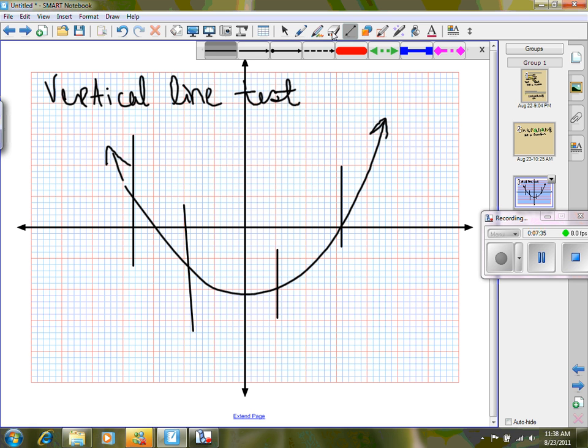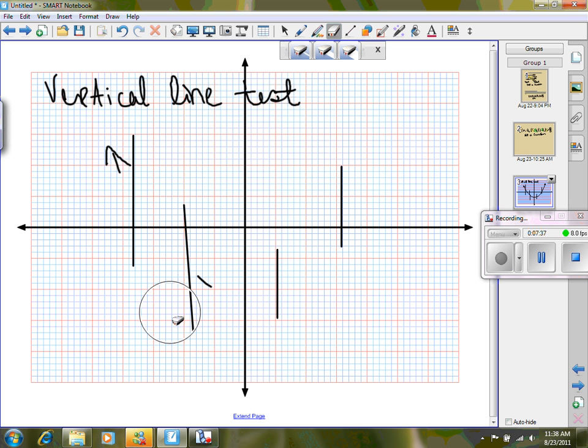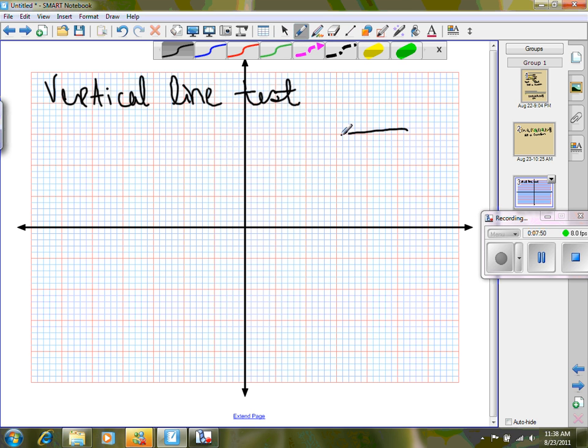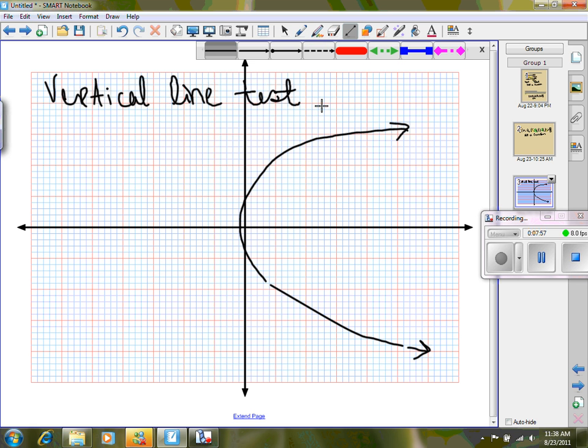So, let's take a look at a parabolic shape that is not a function. Get rid of my vertical lines again. Here's our parabolic shape on its side. Let's drop a vertical line. If we drop it right here at the vertex, it touches it once and only once. But if I drop it anywhere else, it fails. So this one is not a function.